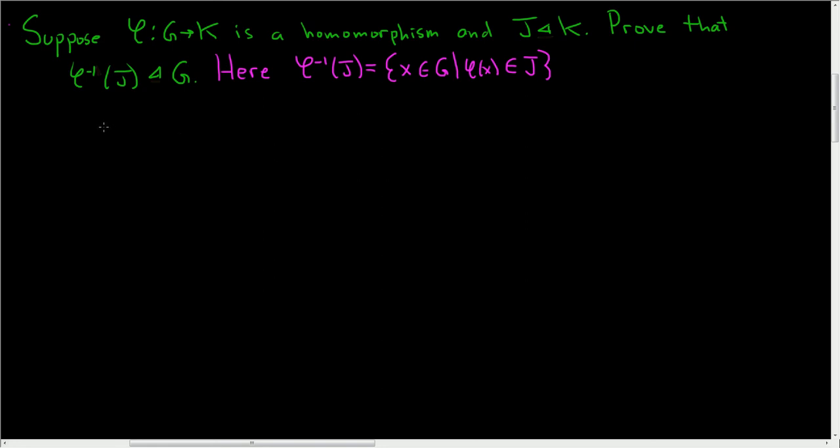And we have to prove that this is a normal subgroup of G. So proof. Suppose we have little g in capital G and X in the inverse image of J.